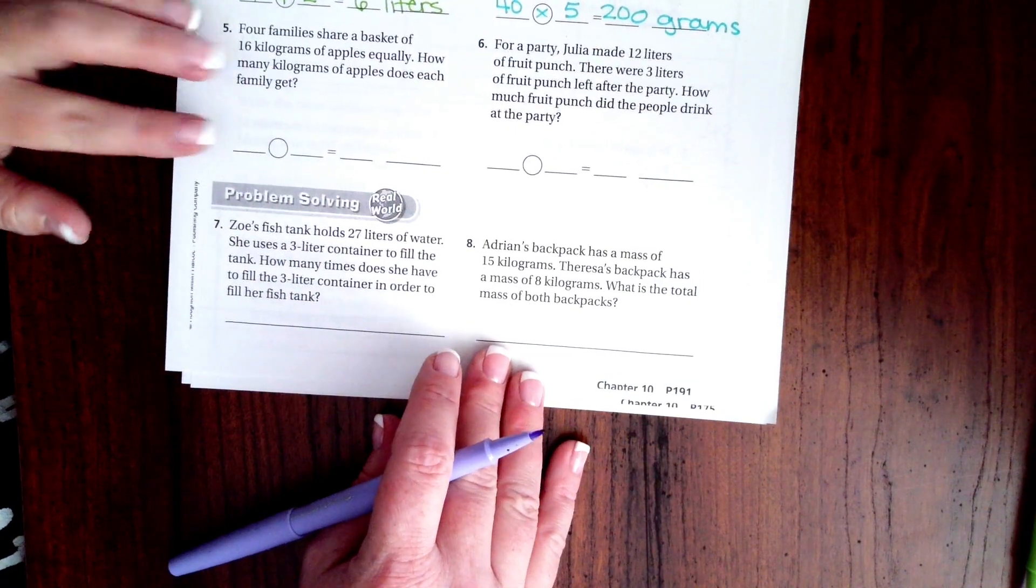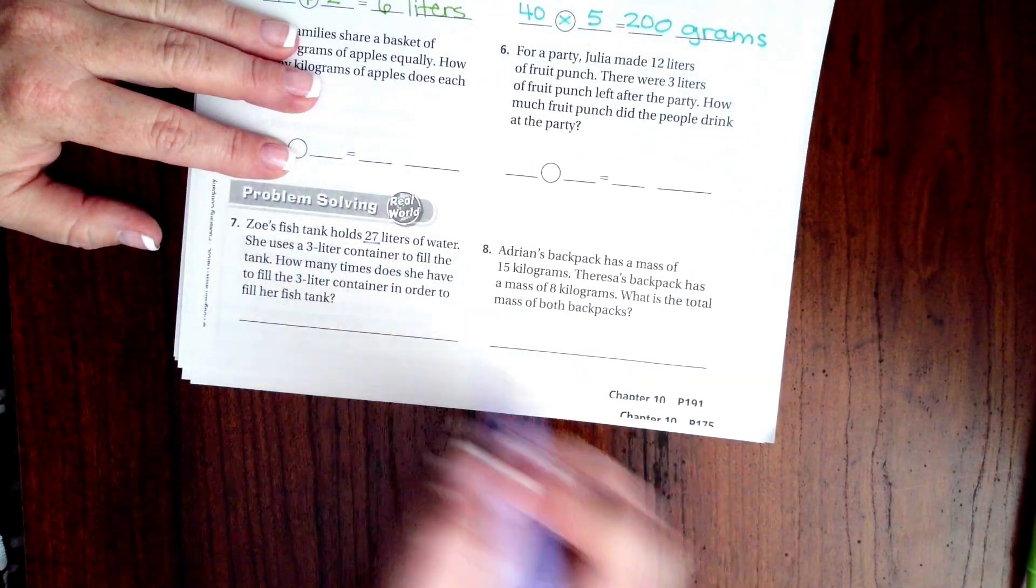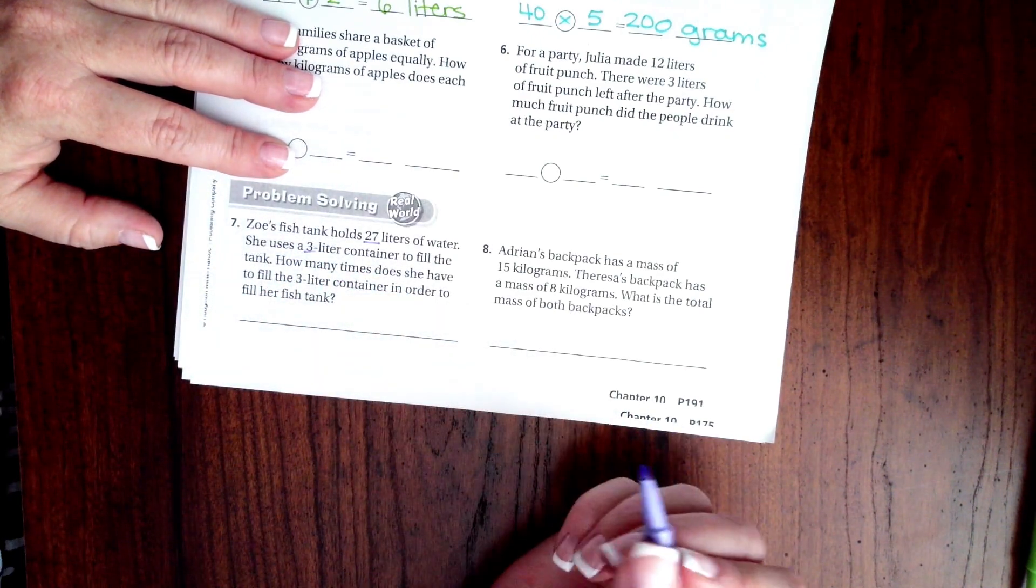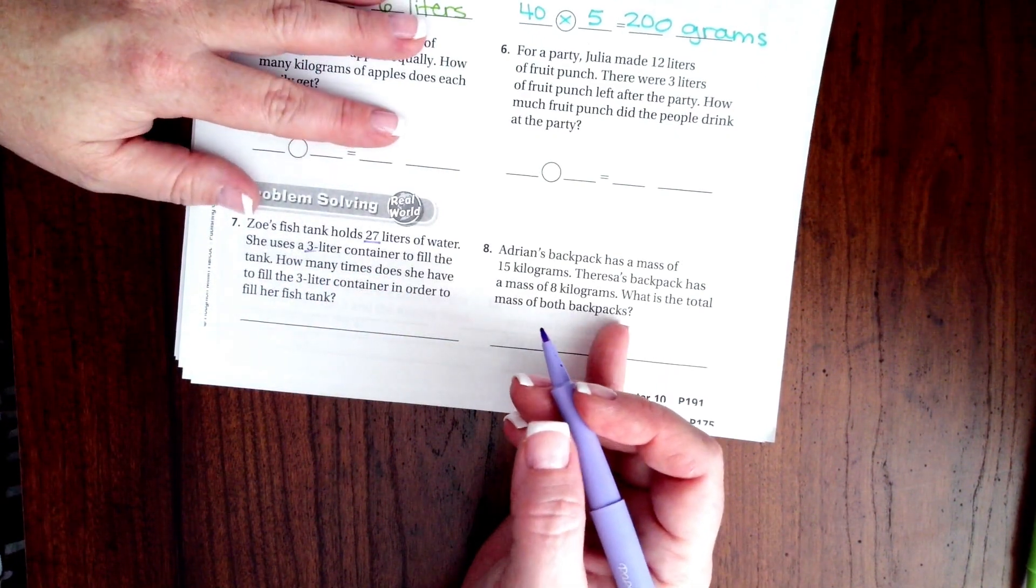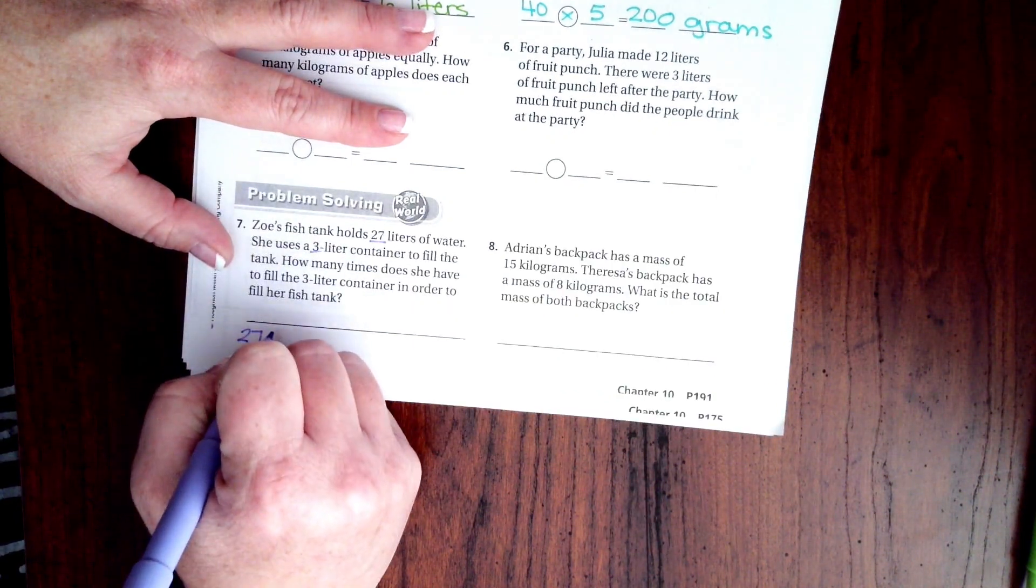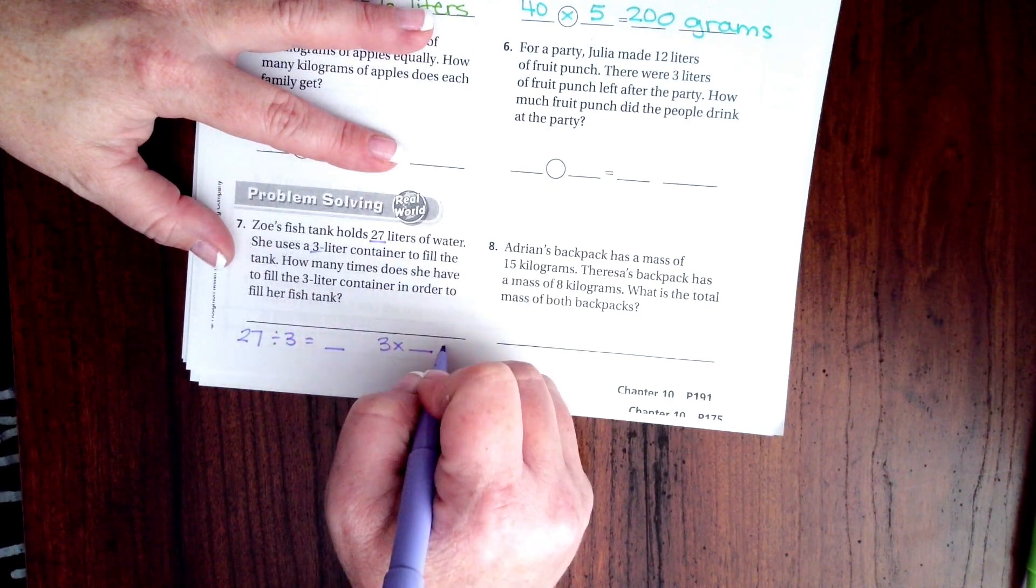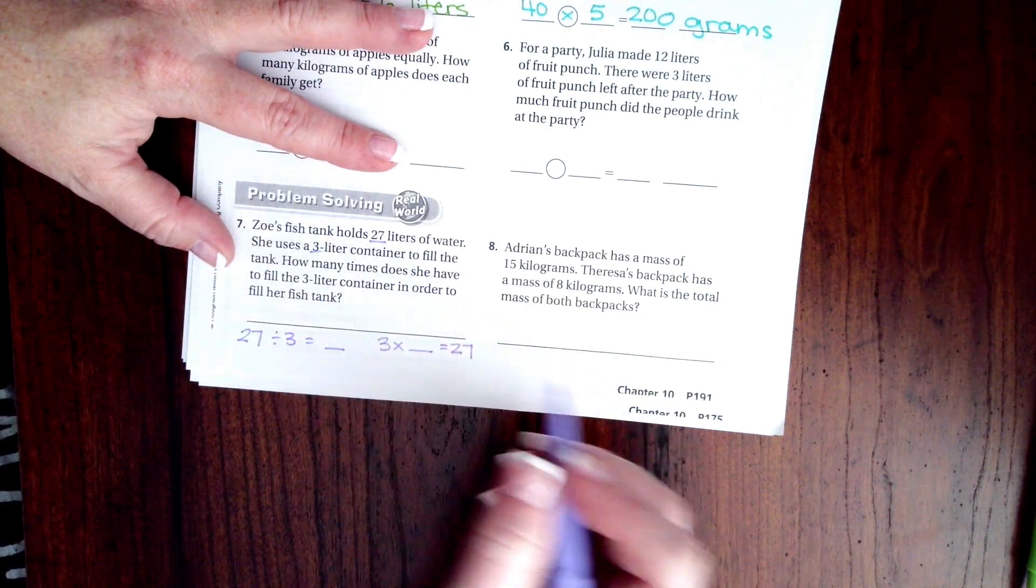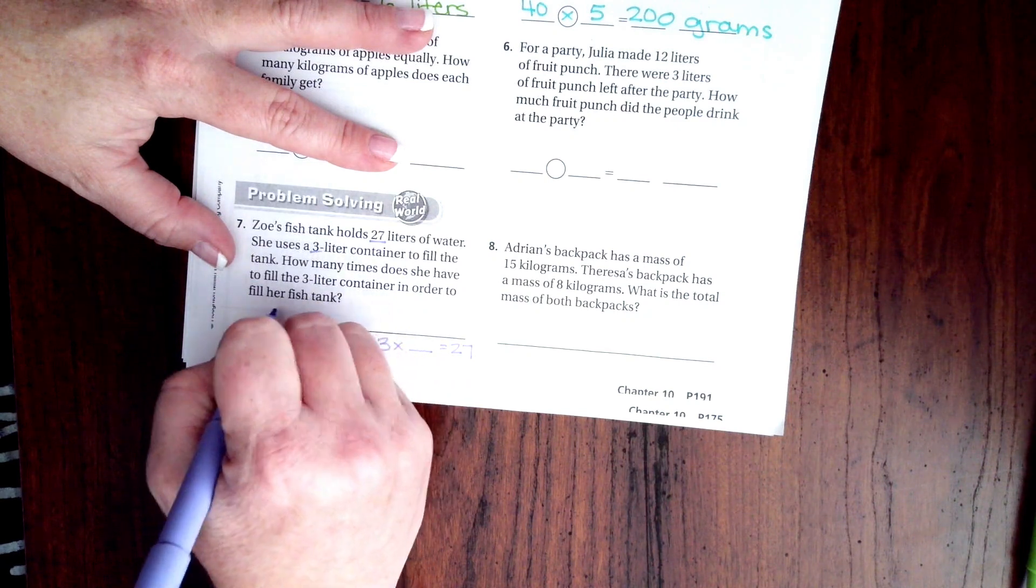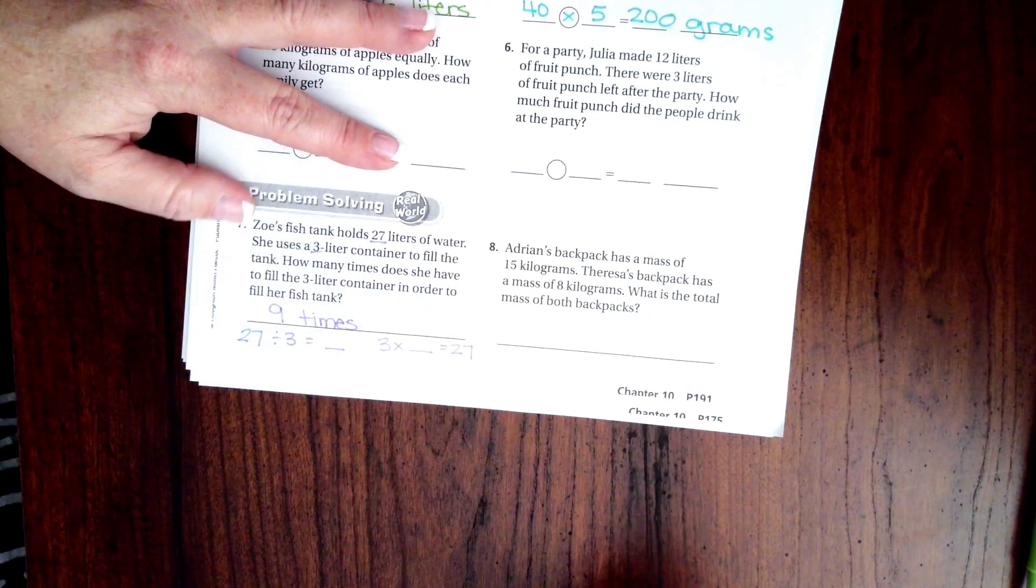You guys are going to do 5 and 6. We're going to go down and do number 7. It says Zoe's fish tank holds 27 liters of water. She uses a 3 liter container to fill the tank. How many times does she have to use her 3 liter container? So 27 divided by 3 equals how much or 3 times how much is 27? Well, I know 3 times 9 is 27. So she has to do it 9 times.